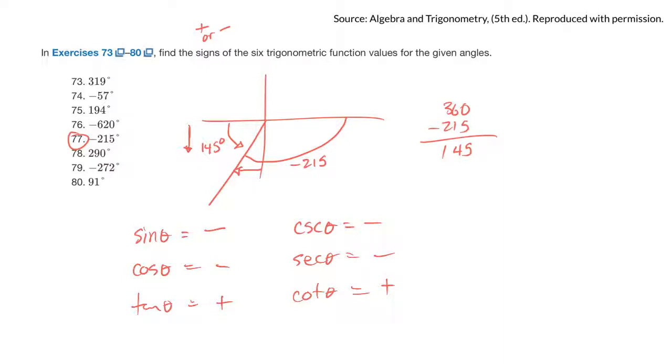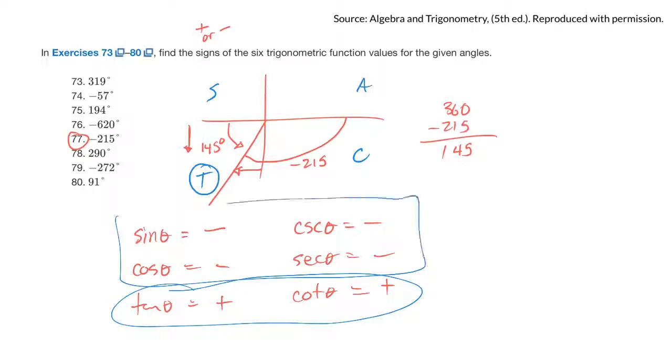Now another way you could do that is the CAST rule. So C, A, S, T. And since it's in this quadrant, tangent is the only one that's positive. So that's positive, meaning the other ones have to be negative. You can use that.